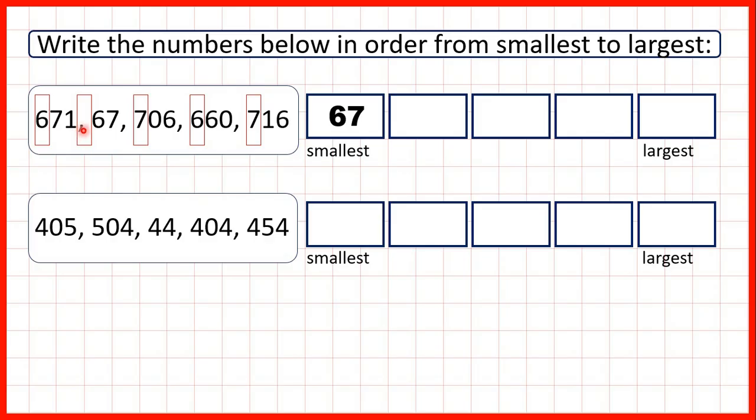Then if we look at our hundreds digits, because remember we compare numbers by comparing the larger place values first. So first comparing our hundreds before we compare our tens or ones. We have two numbers with six hundreds and two numbers with seven hundreds. So if we focus on the numbers with six hundreds to decide which number is next smallest...